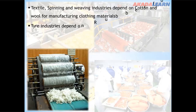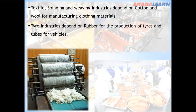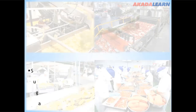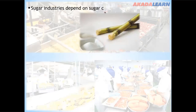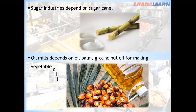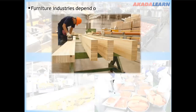We have the tire industries which depend on rubber for the production of tires and tubes for vehicles. We have sugar industries which depend on sugar cane for the production of sugar. We also have the oil mills which depend on oil palm and groundnut oil for making vegetable oil.